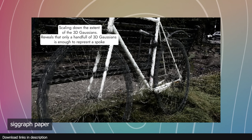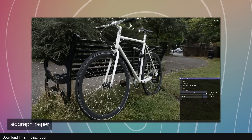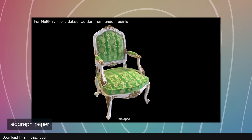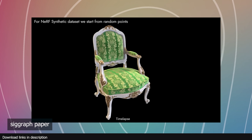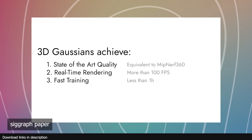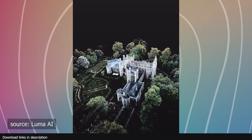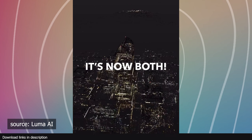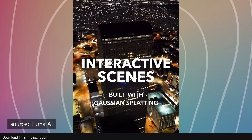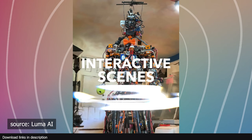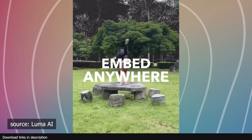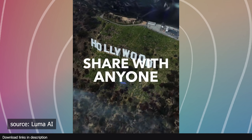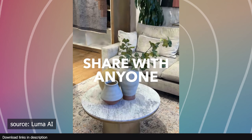Number one: hyper-realistic visuals. Gaussian splatting excels at simulating complex materials like water, clouds, smoke, and even fire, adding an extra level of realism that makes your creations pop off the screen. Number two: efficiency meets beauty. Unlike some rendering techniques that require massive computation power, Gaussian splatting is surprisingly efficient. It balances performance with breathtaking visuals, ensuring that your project runs smoothly without sacrificing quality.